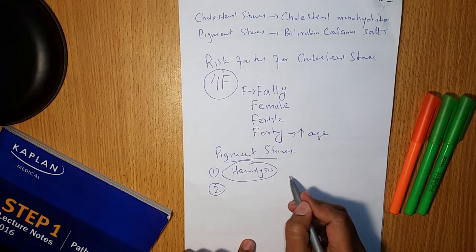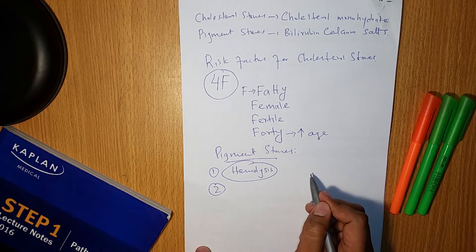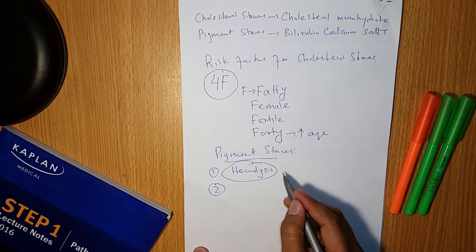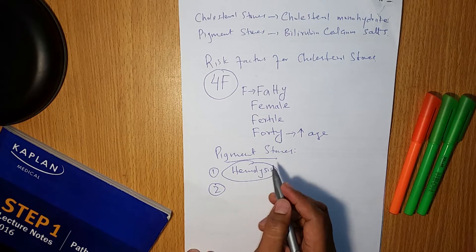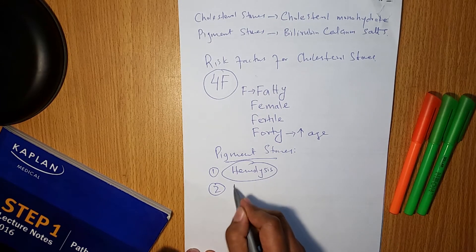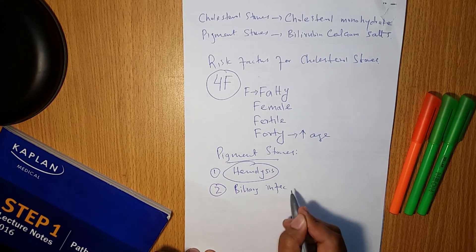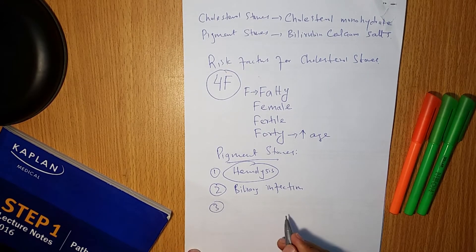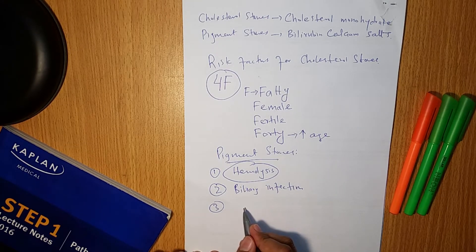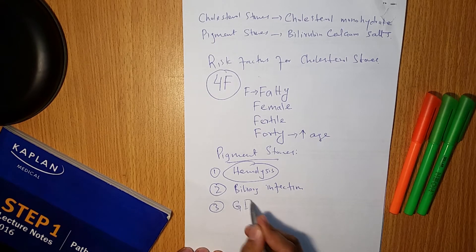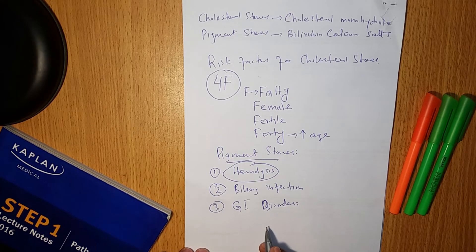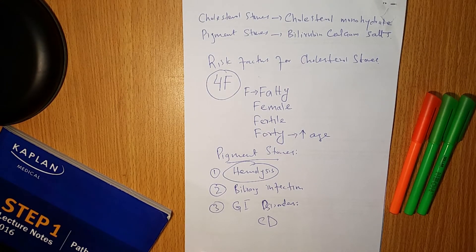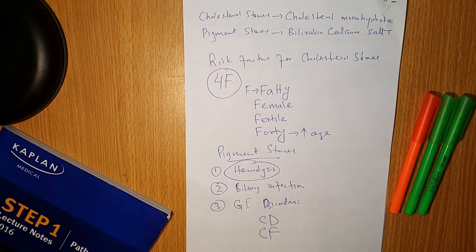Hemolysis due to sickle cell anemia, hereditary spherocytosis, and thalassemia can lead to pigment stone formation. Pigment stones are also associated with biliary infection and gastrointestinal disorders, including ileal disease such as Crohn's disease, cystic fibrosis, and pancreatic insufficiency.